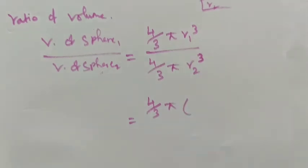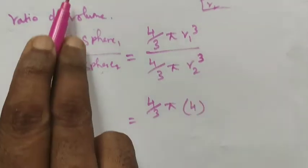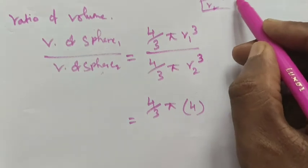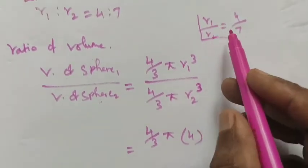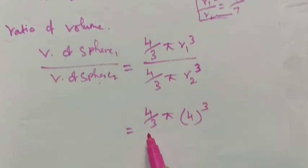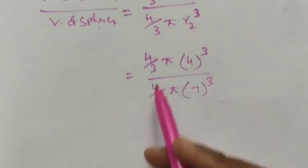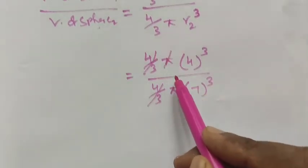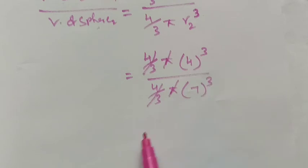The r values from the ratio: r1 equals 4, r2 equals 7. So it becomes 4 cubed divided by 7 cubed. The 4 by 3 pi terms cancel. 4 cubed means